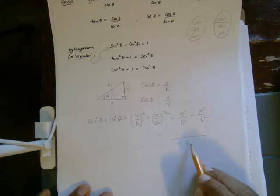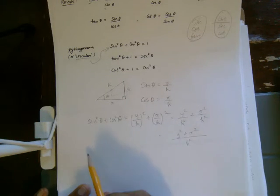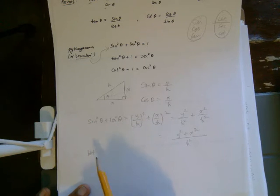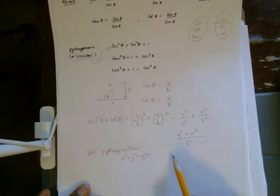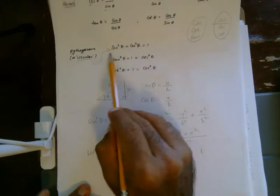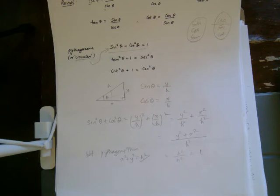Taking the LCM, we get (X squared plus Y squared) over H squared. Since it's a right triangle, by Pythagoras' theorem X squared plus Y squared equals H squared. So this becomes H squared over H squared, which is 1. That gives us that sine squared theta plus cosine squared theta is always 1. You should know both proofs — one using the circle and one using the triangle.